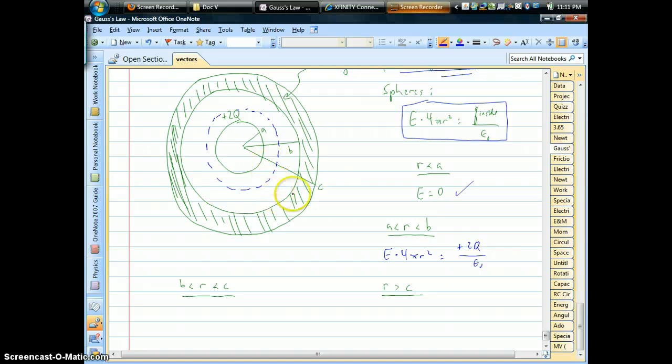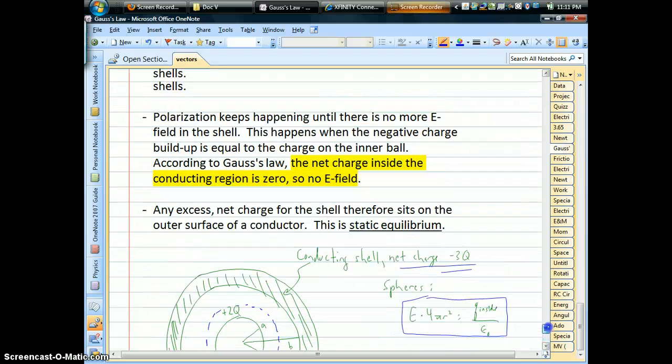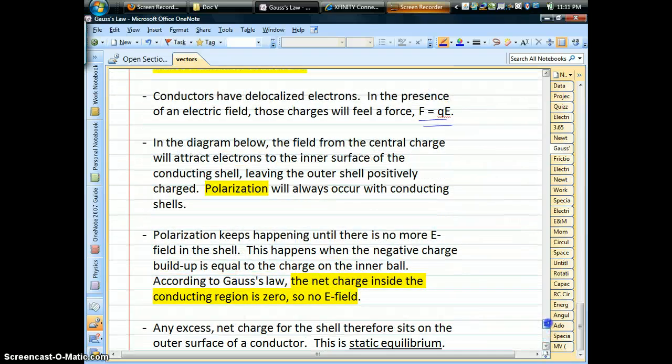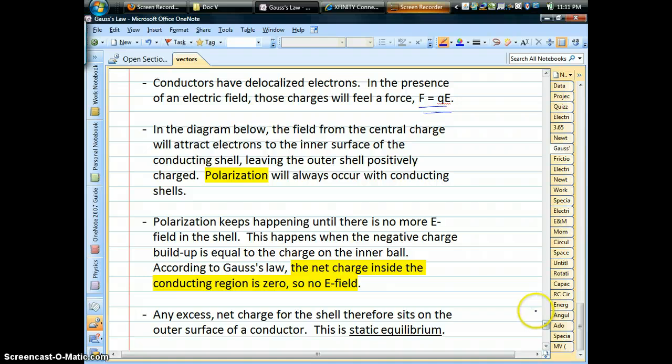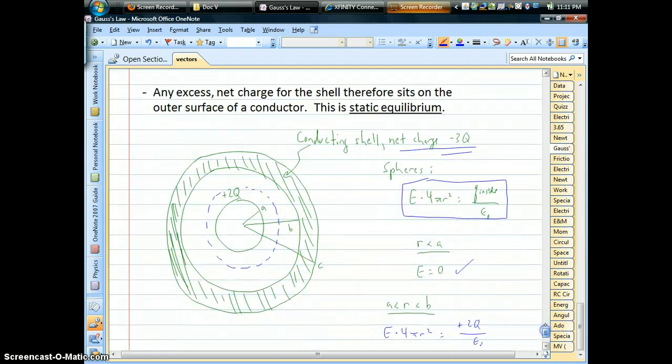That field's going to shoot across the gap into the metal, and it's going to produce a force on those free electrons. So free electrons are going to be attracted towards that positive charge. But as far as they can go, they get stuck on that inner surface. Put those little minus signs there.